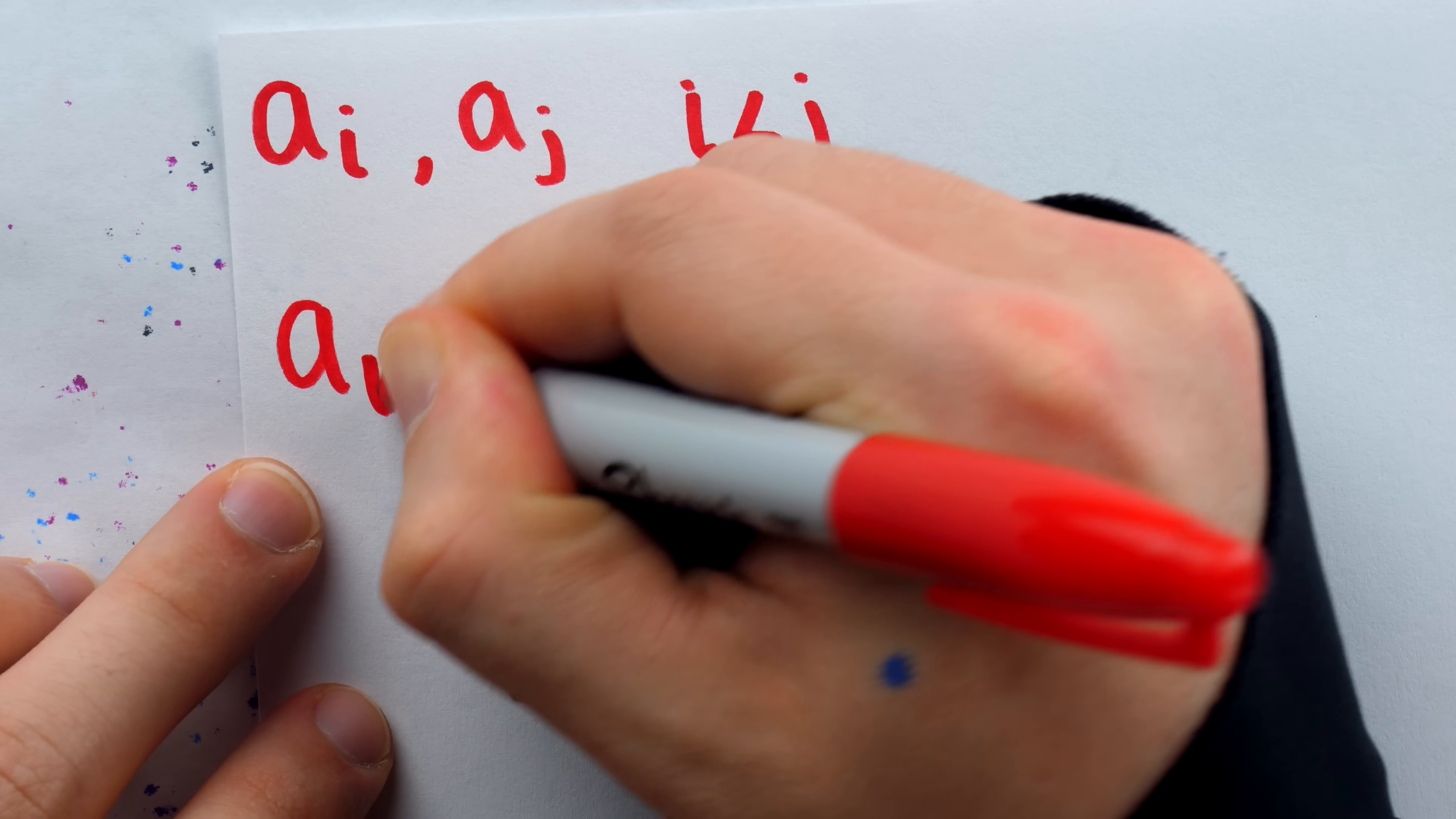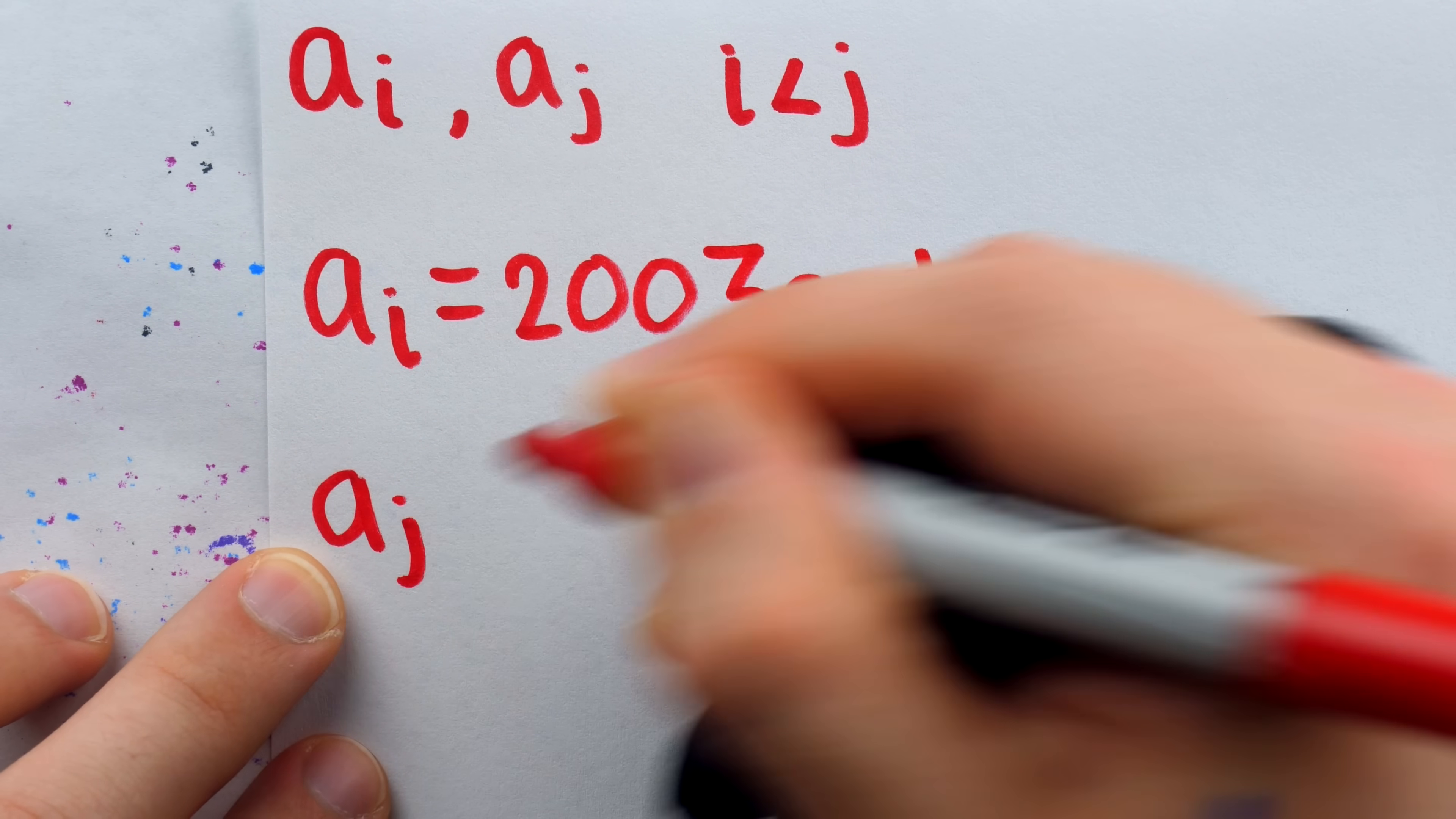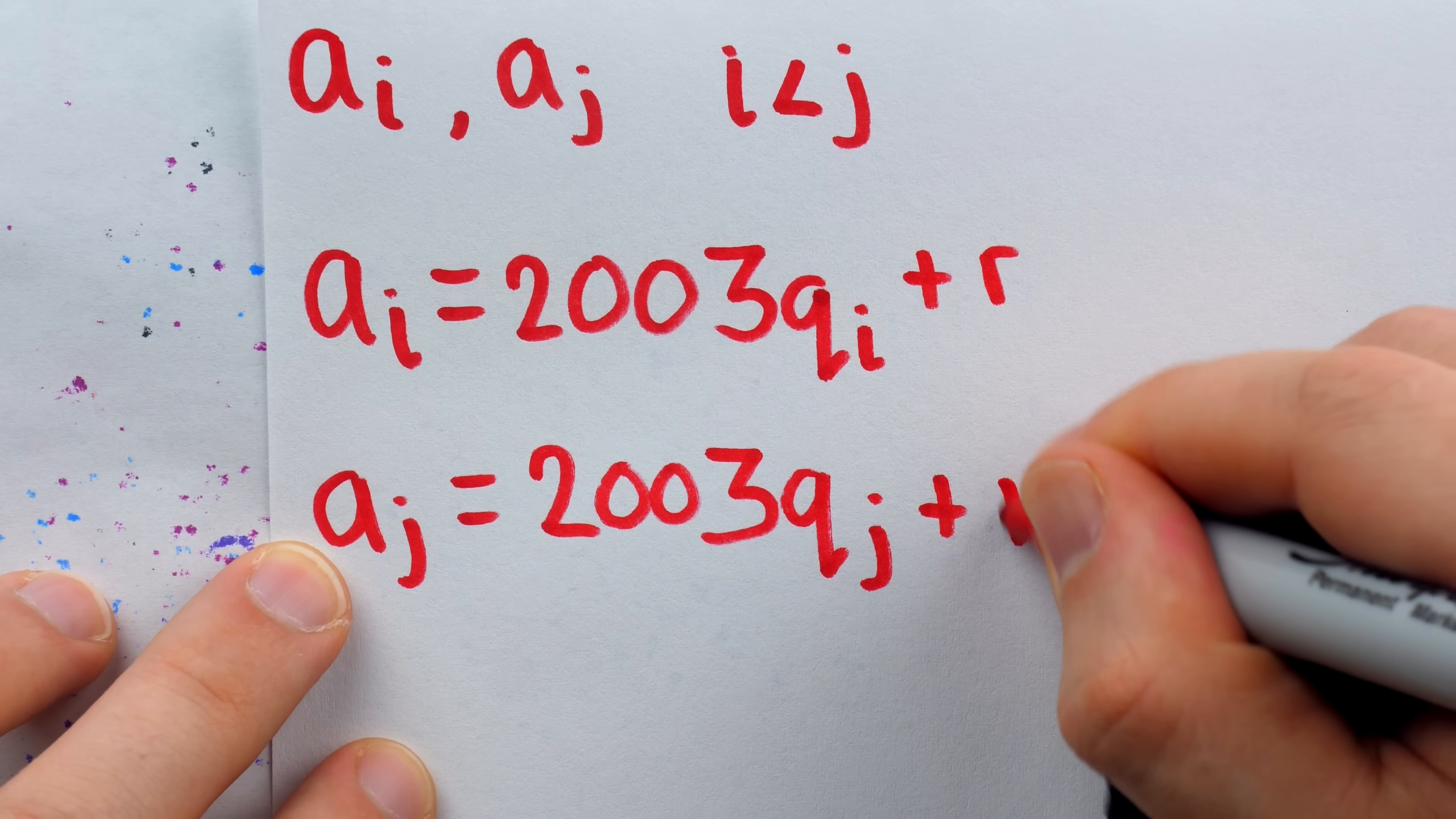By the division lemma, we could say that A_i is equal to 2003 multiplied by some quotient, we'll call Q_i, and then plus some remainder. Similarly, that other term of the sequence, A_j, is equal to 2003 times some other quotient, we'll call that Q_j, plus that same remainder, R.